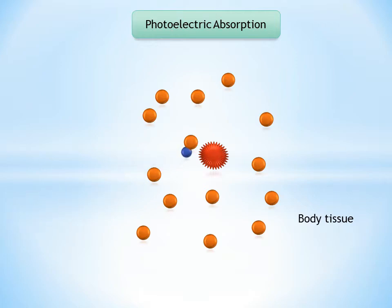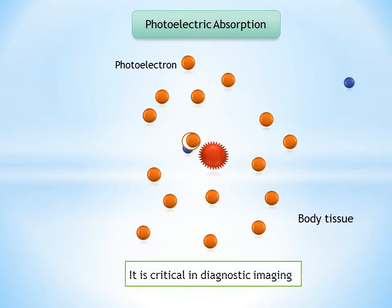The kinetic energy imparted to the recoil electron is equal to the energy of the incident photon minus the binding energy of the electron. In the case of atoms with low atomic numbers, like for example those in most biologic molecules, the binding energy is small and the recoil electron acquires most of the energy of the incident photon.